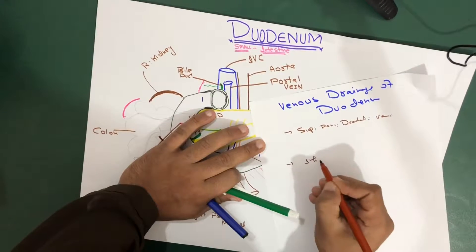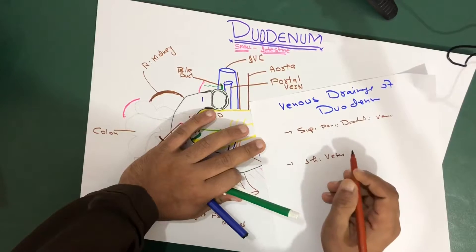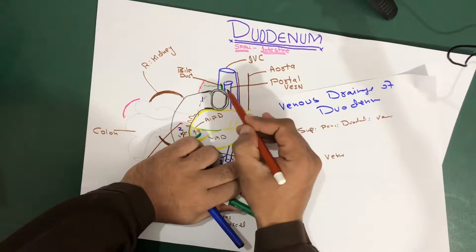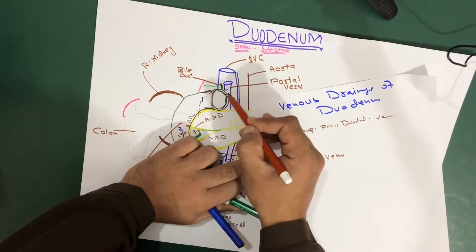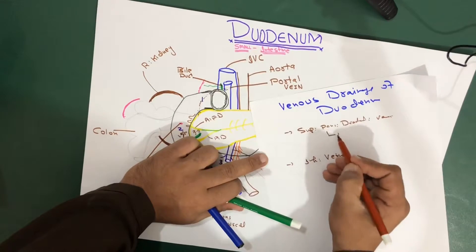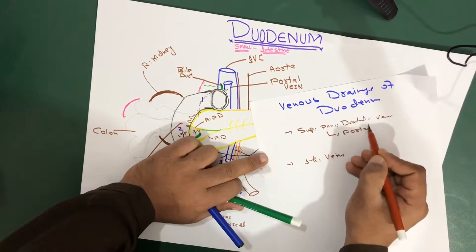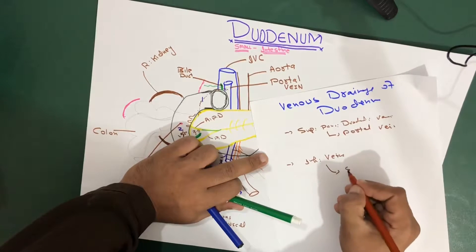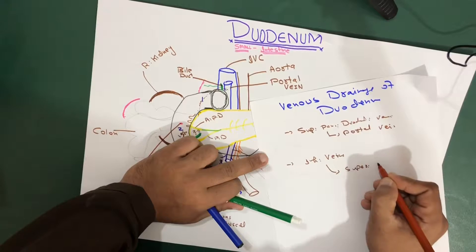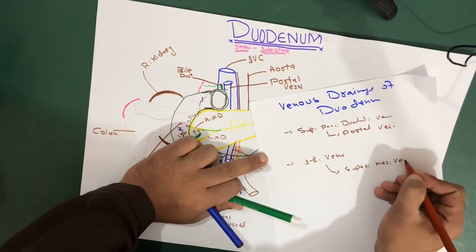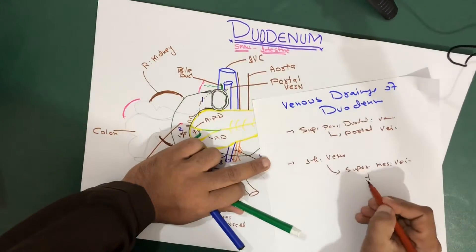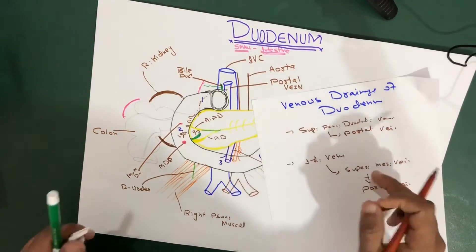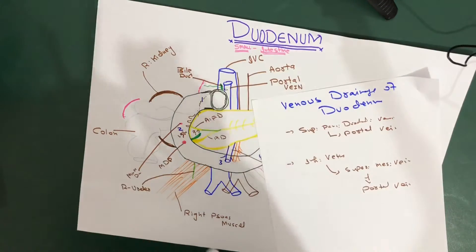We have two main drainage pathways: the superior pancreaticoduodenal veins draining the upper half, and the inferior veins draining the lower half. The superior pancreaticoduodenal vein drains directly into the portal vein. The inferior veins first drain into the superior mesenteric vein, and the superior mesenteric vein then goes upward and drains into the portal vein. Very simple.